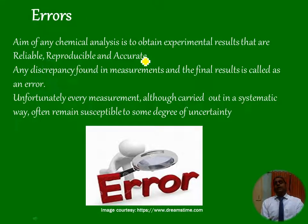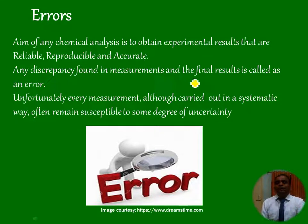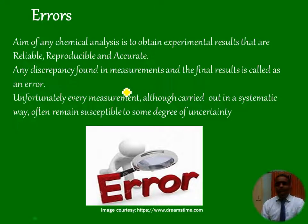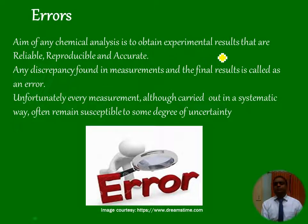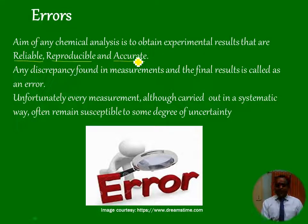Error is nothing but any discrepancy found in measurement and the final results. Any discrepancy found during the measurement is known as error. The fundamental aim of any chemical analysis is to obtain experimental results that are reliable, that are reproducible, and accurate.